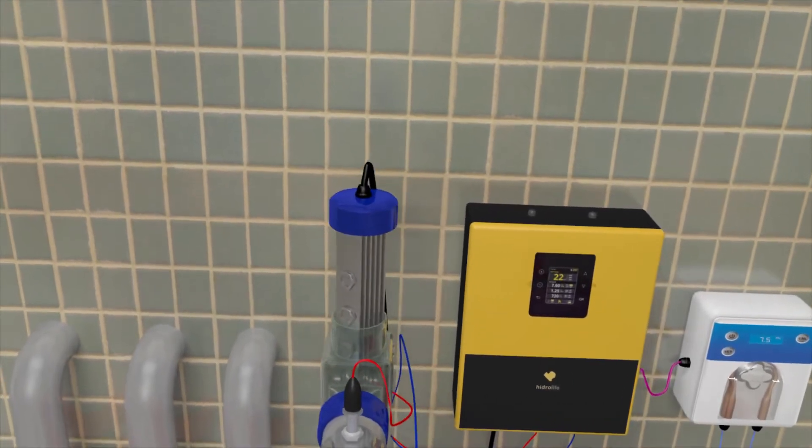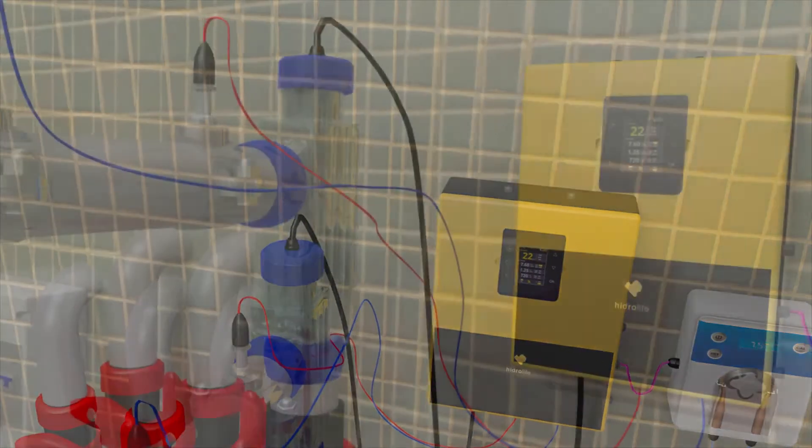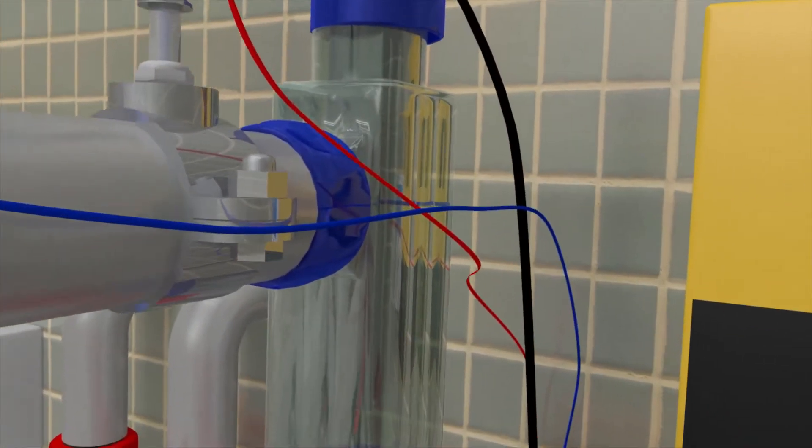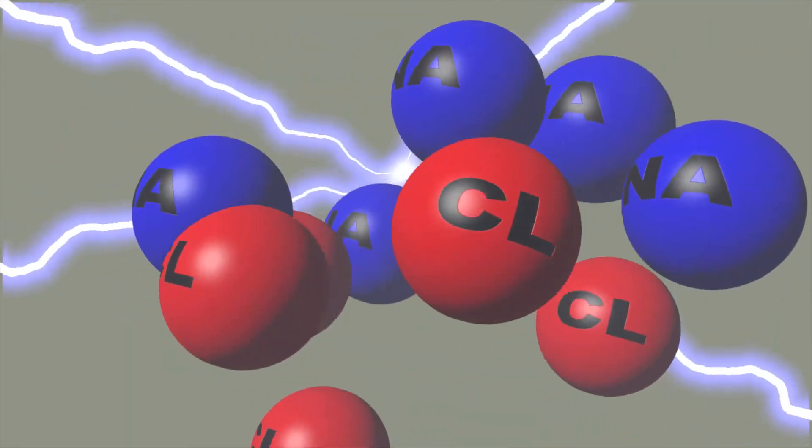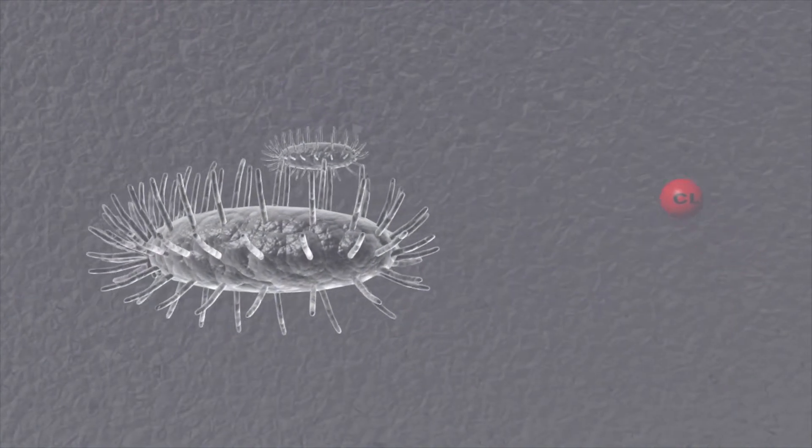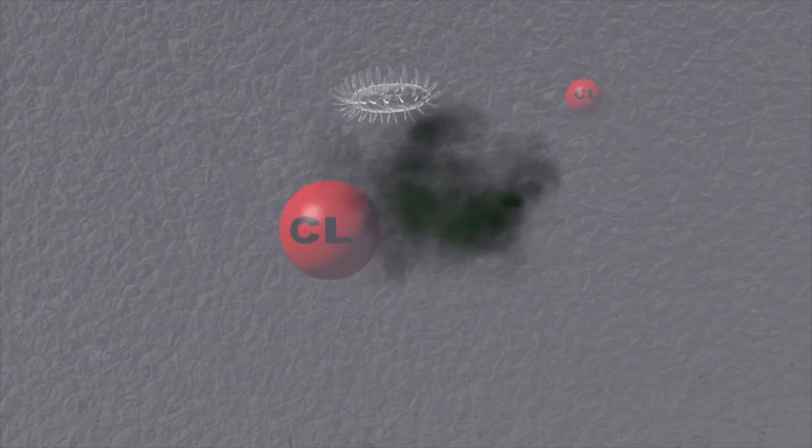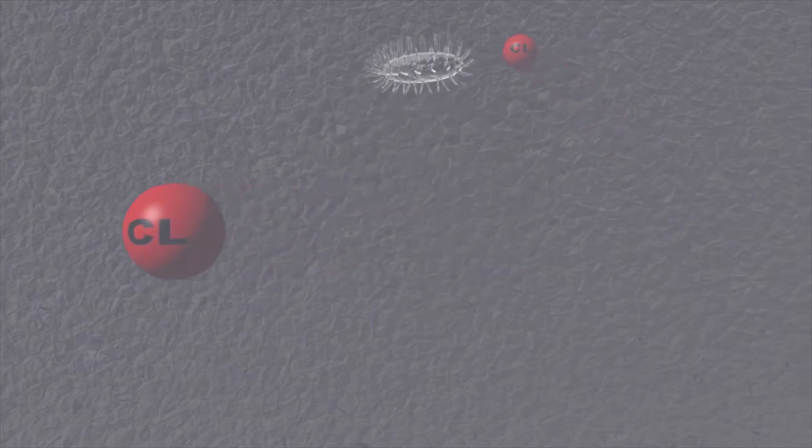To sum up, the performance of this equipment uses an electrolytic cell to separate the salt molecules dissolved in the water. When the slightly salted water passes through the cell, it separates the chlorine from the sodium, which together form the salt, making the chlorine act as a natural disinfectant and oxidant.